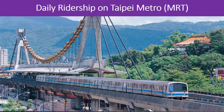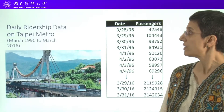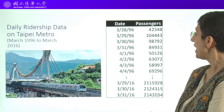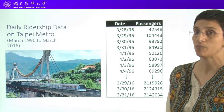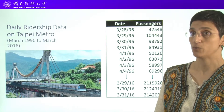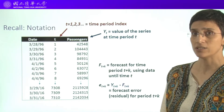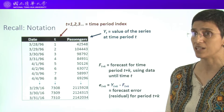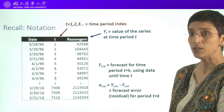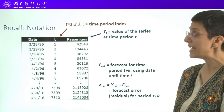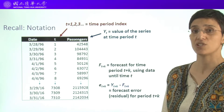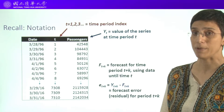Let's recall the MRT ridership data example that we saw in the last session. Assume that we have 20 years of daily data for the ridership. We talked about some notations from the last session — t, which is the running index, and y sub t, which is the value that we're measuring.